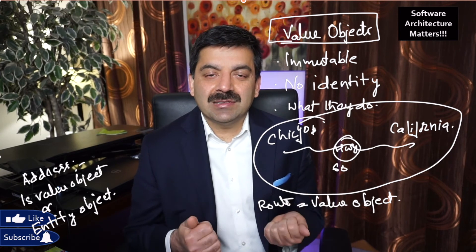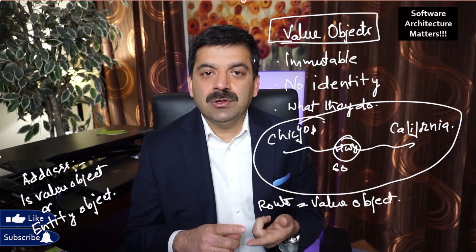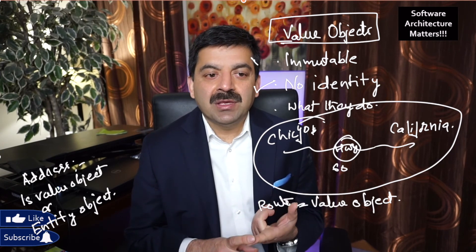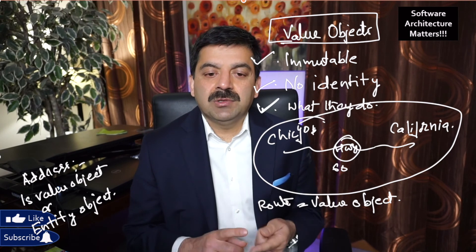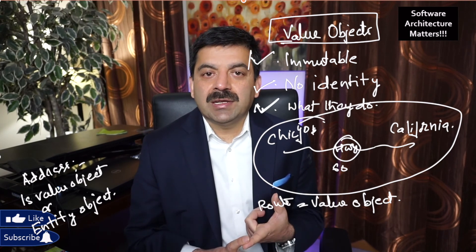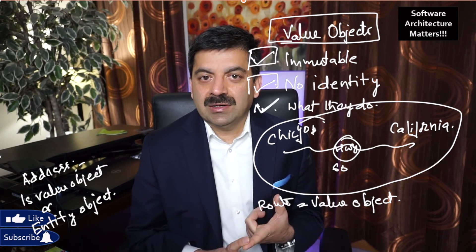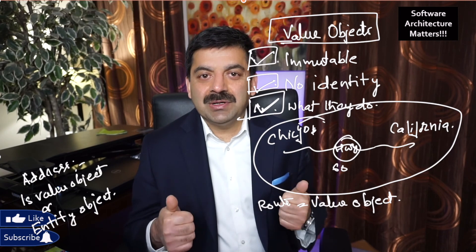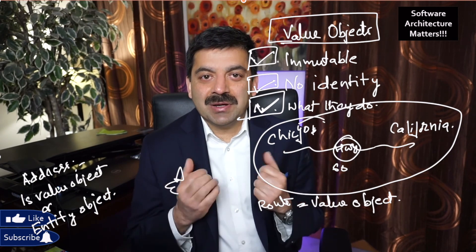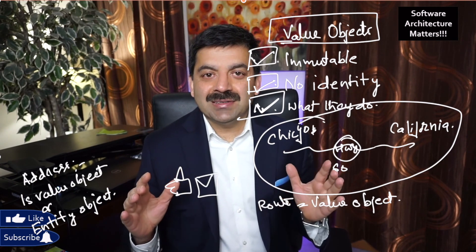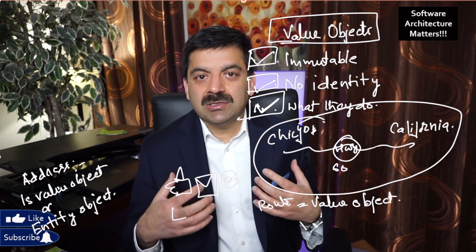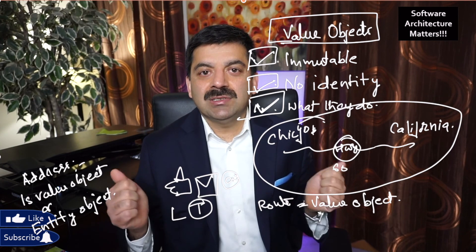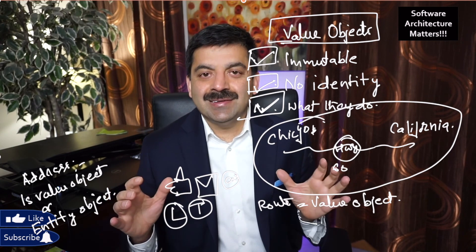So friends, today we discussed what value objects are. Value objects don't have any identity, they are immutable, and they should be easily replaced with another object. We just care what they do, not which specific object did the service for us. If you like this video, please like it, share it, and subscribe to my channel. Also connect with me on LinkedIn and Twitter — especially LinkedIn, where I'll be posting small summaries of these videos. Thanks!